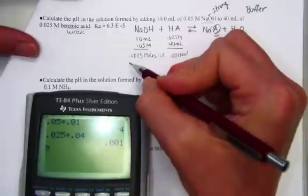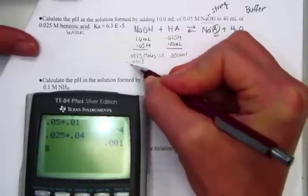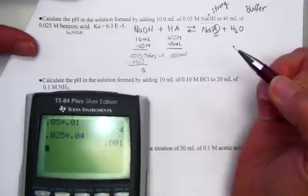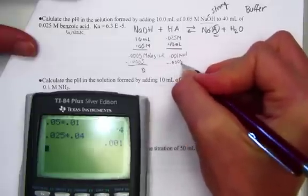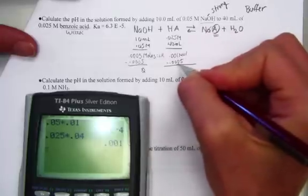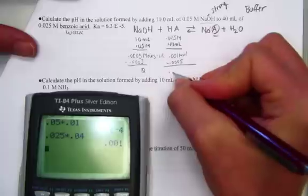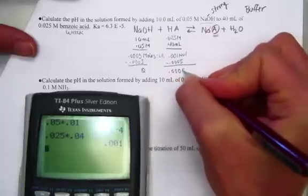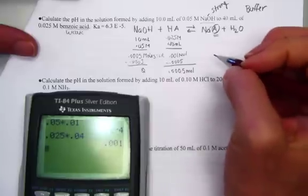So here's what we know then. In the 1 to 1 ratio, the limiting reagent gets consumed, and there are 0 moles of the base left after the titration. Along the way, it consumed 0.0005 moles of the acid.